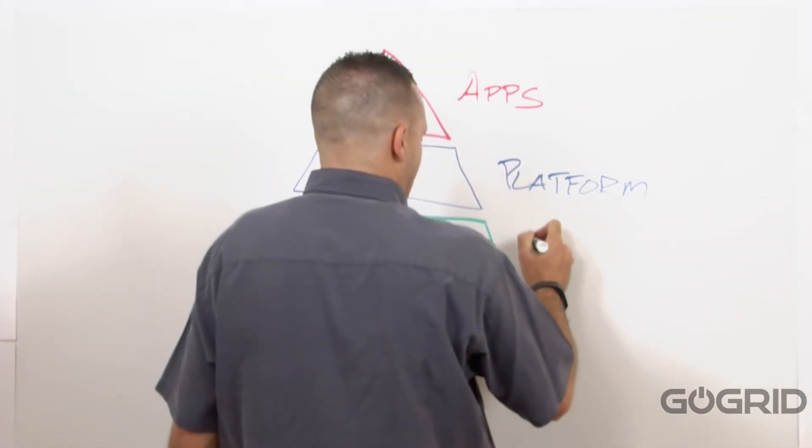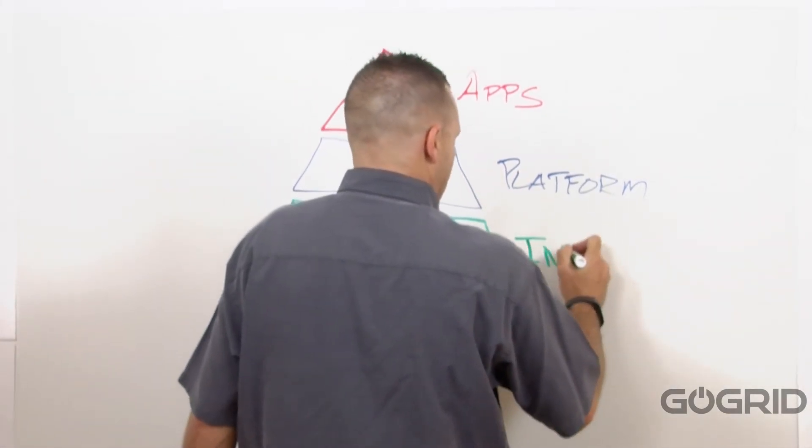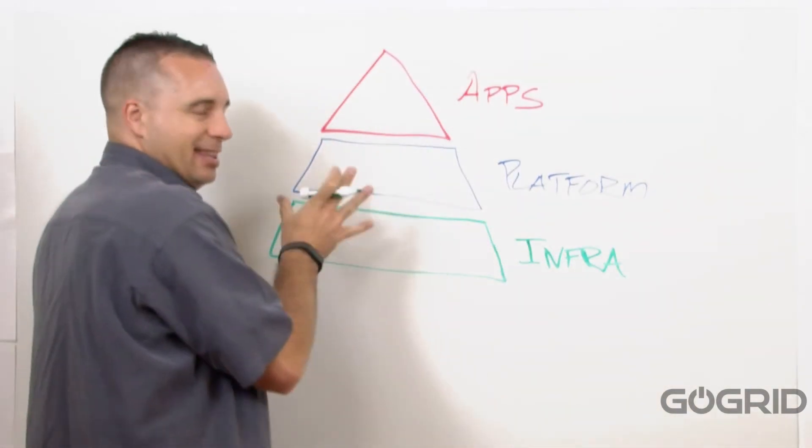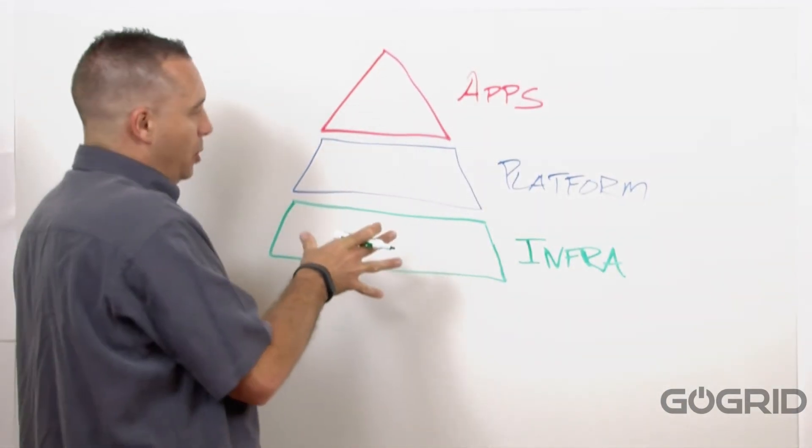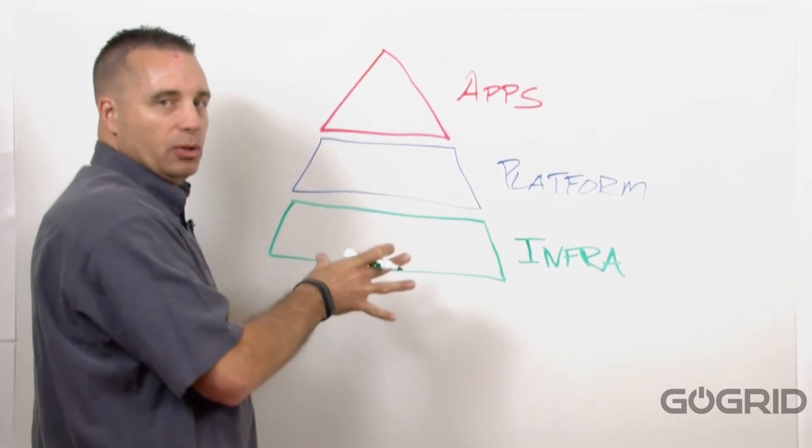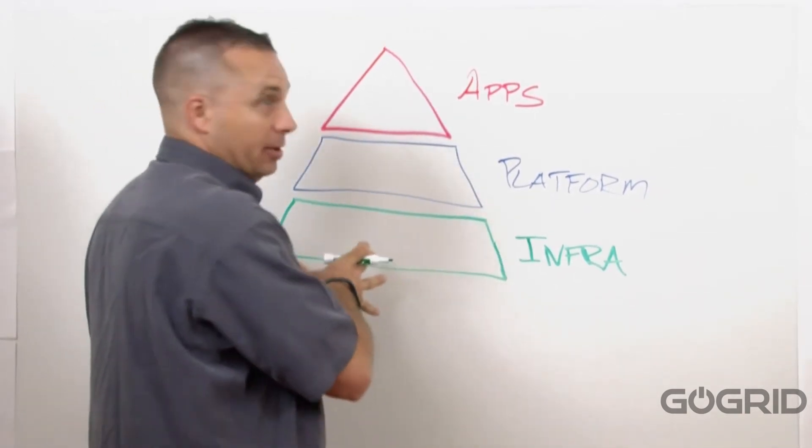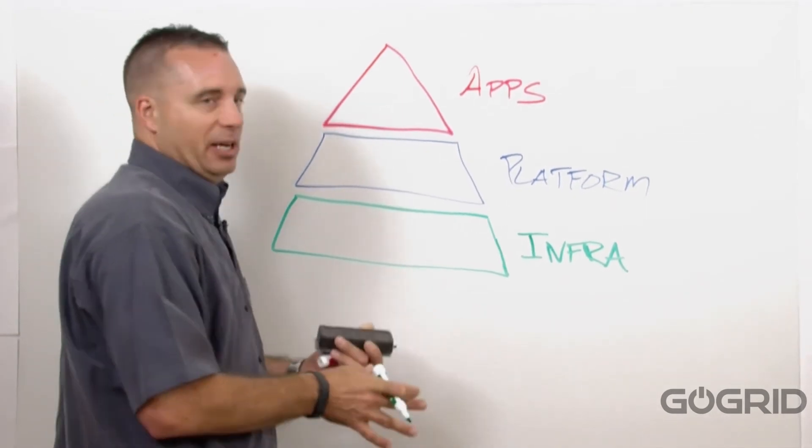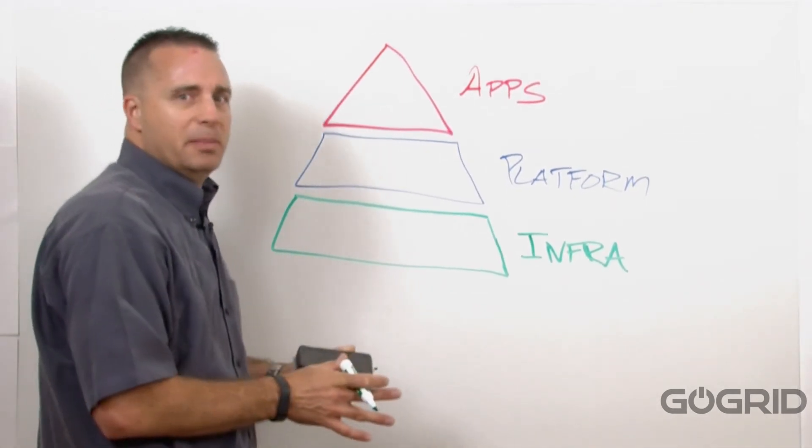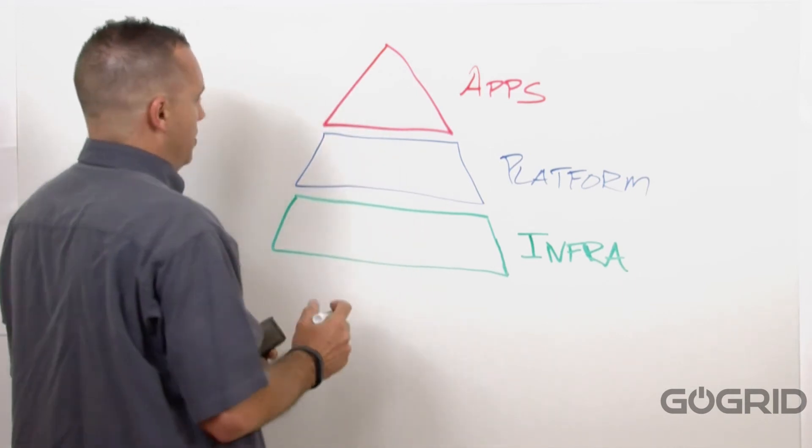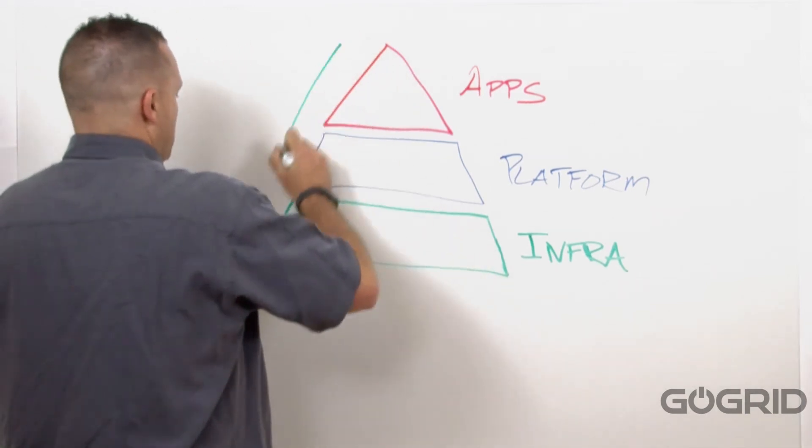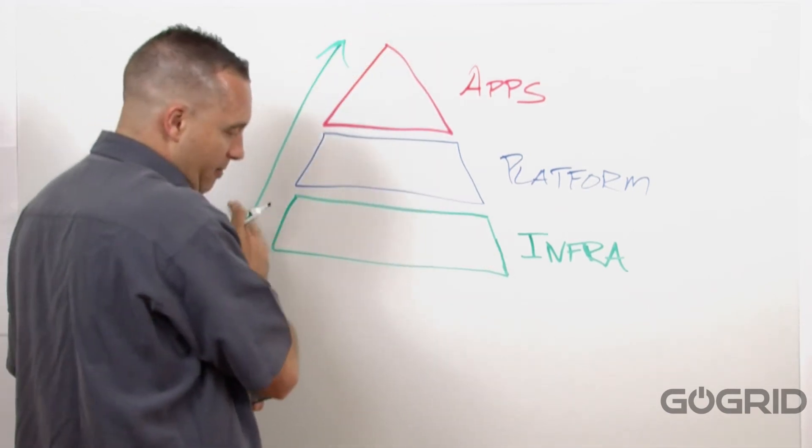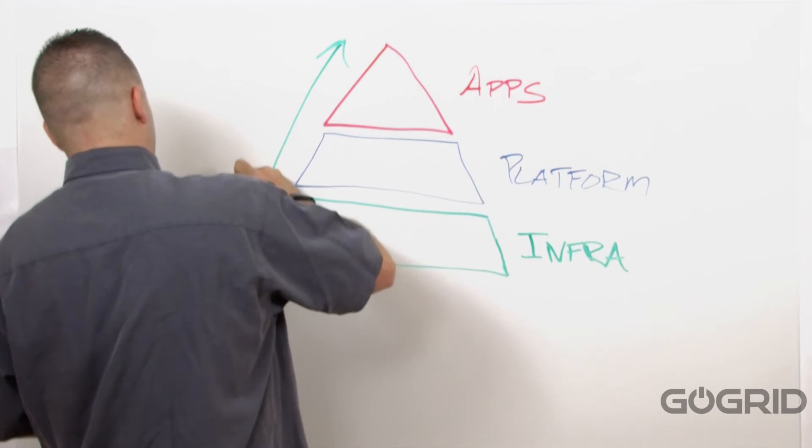This is called the cloud infrastructure layer. At this layer, you're given a lot more access and more control to things to control your infrastructure. Access to the operating system. You have full root and administrative access. Essentially, as you move up and down the pyramid here, you have more control down at the bottom.